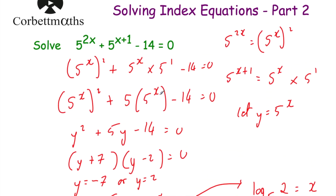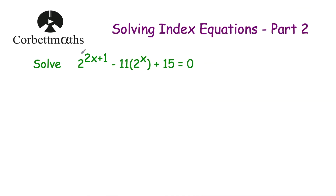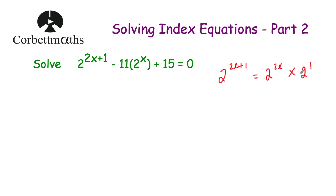This one required a little more rearranging before we started. Our next question: solve 2 to the power of 2x plus 1, subtract 11 times 2 to the power of x, plus 15 equals 0. Let's rewrite this — focusing on the first term, 2 to the power of 2x plus 1. We split this up: instead of 2 to the power of 2x plus 1, we write 2 to the power of 2x times 2 to the power of 1, because when multiplying same-base terms you add the powers.